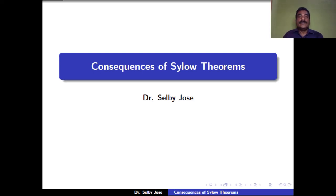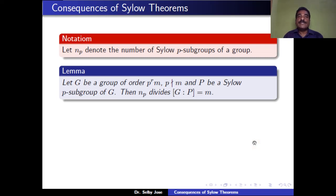Hi. In the last few sessions, we were talking about the Sylow theorems — the first Sylow theorem, the second Sylow theorem, and the third Sylow theorem. In this session, we talk about some consequences or corollaries of the Sylow theorems. We denote NP as the number of Sylow-P subgroups of a group. Let us state the first consequence as a lemma.